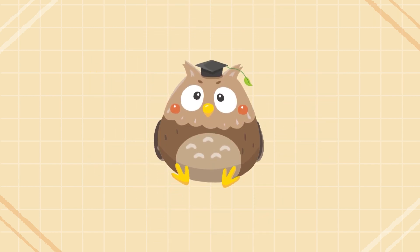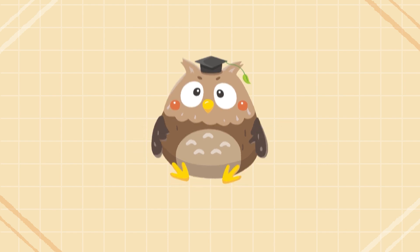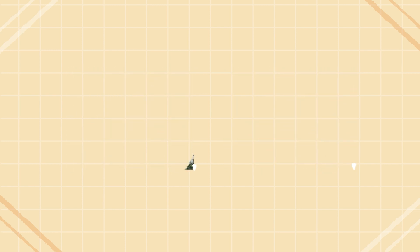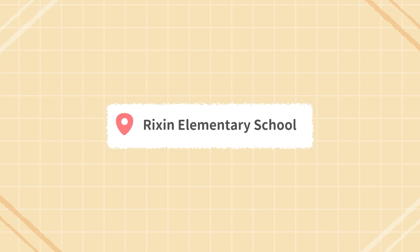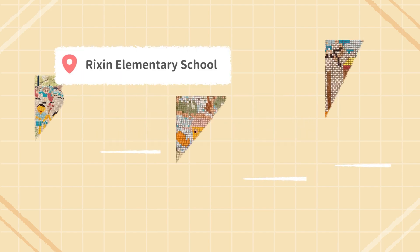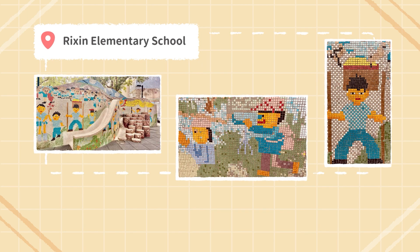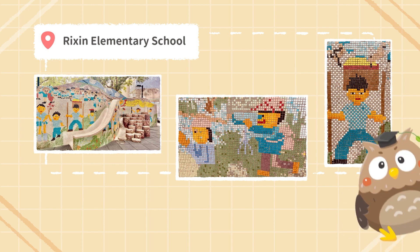Mosaic installation art comes in different forms. Some 2D mosaics are decorated on the wall. What do you see in the mosaic? What is the theme of the mosaic? There is an elementary school near Zhongshan MRT station — Rishin Elementary School. Many years ago, hundreds of students from the school helped create and design the public mosaic art installation there. Do you like the artworks?